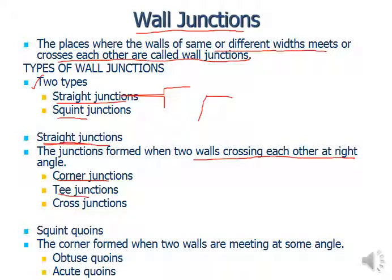A corner junction is where two walls simply meet at a corner, a T-junction is where one wall meets another forming a T-shape, and a cross junction is where walls meet on all four sides. For squint junctions, the corner formed when two walls meet at some angle is called an obtuse queen or acute queen, depending on whether the angle is greater than or less than 90 degrees.